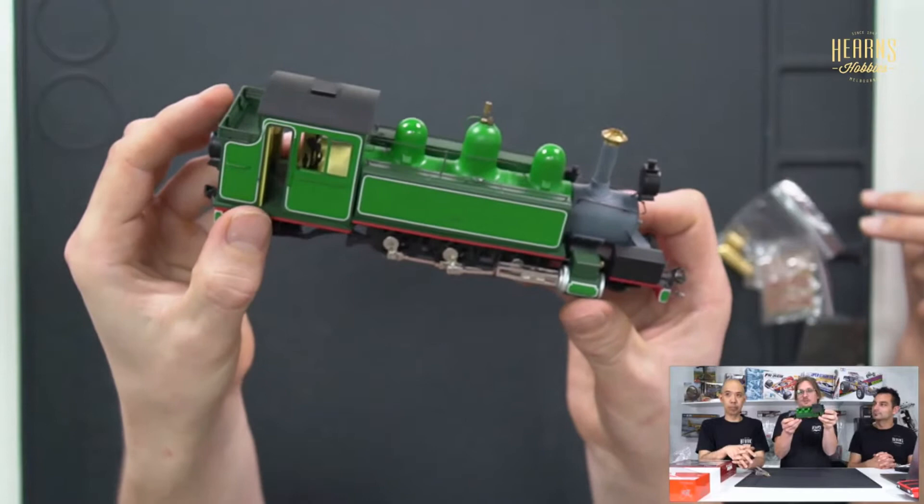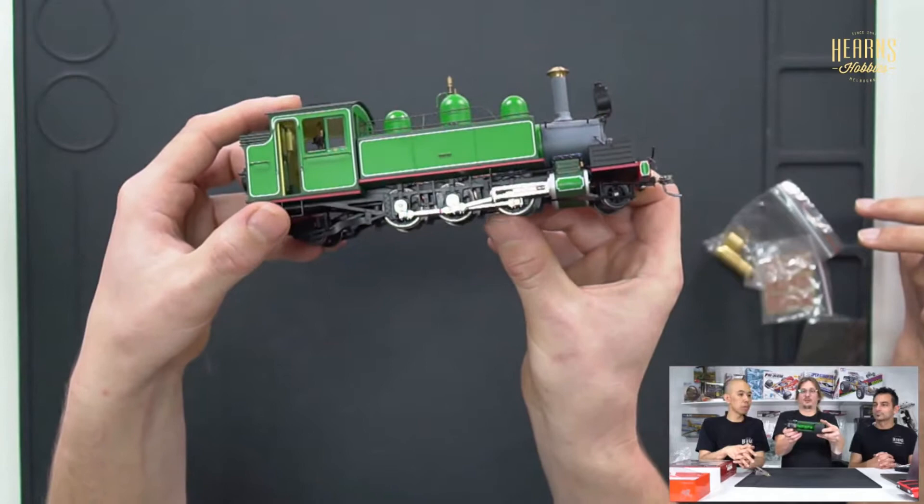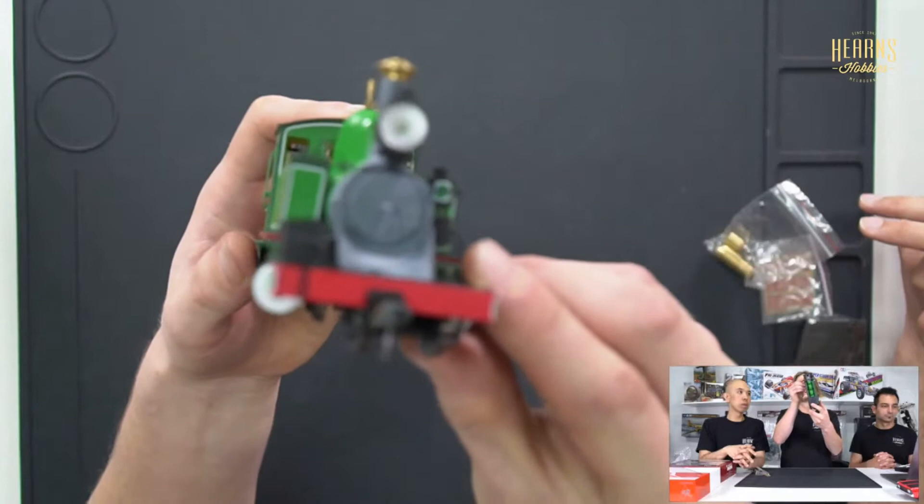It's a 2-6-2 locomotive, so that's a reference to the wheels. You've got two pilot wheels, six driving wheels that are coupled to the cylinders, and two trailing wheels.